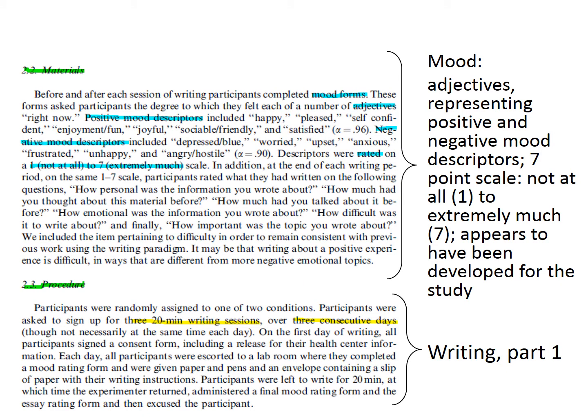Then we look for the operational definitions to know specifically how they defined each variable. Knowing about APA style gives us an idea of where to look — we know this information should be in the methods section. Skimming the section, the first variable we see is mood. We can use the information highlighted in this slide to summarize the operational definition. Your notes on the article summary template should include at least the information included in the example in the slide.